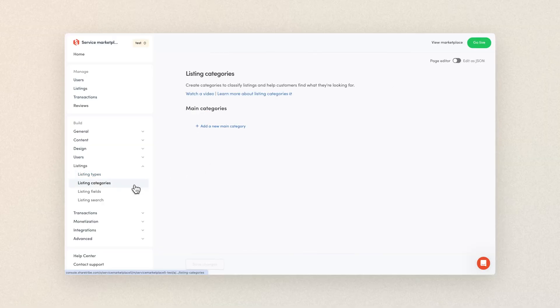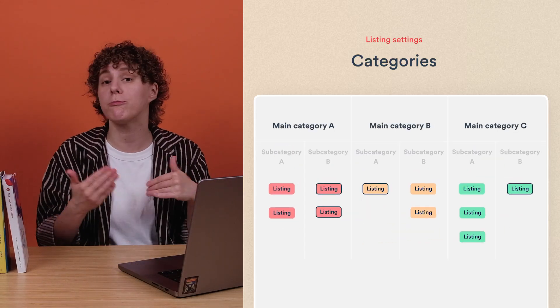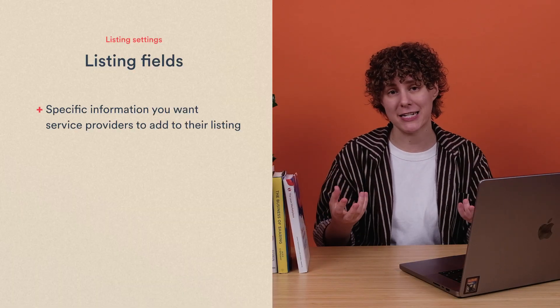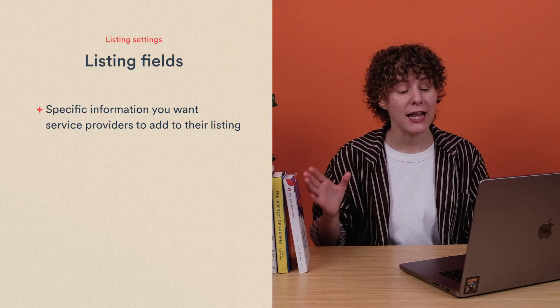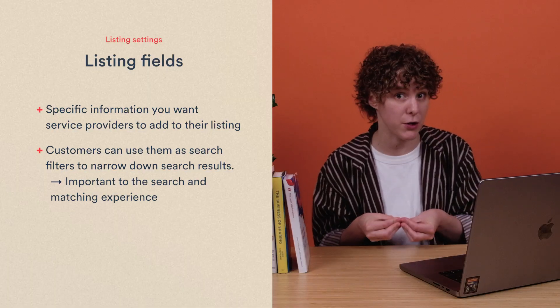After listing types, the next listing settings to configure are listing categories and listing fields. We won't be going into more detail about those in this video, since they're relevant to basically any kind of marketplace. But in a nutshell, categories are a way to organize listings on your marketplace and help people find what they're looking for. Listing fields are specific information you want your service providers to add to their listing to help customers make the right purchase choice. Listing fields can also be used as a search filter, so they're also important to the search and matching experience. ShareTribe's help center has great videos on configuring both of these.